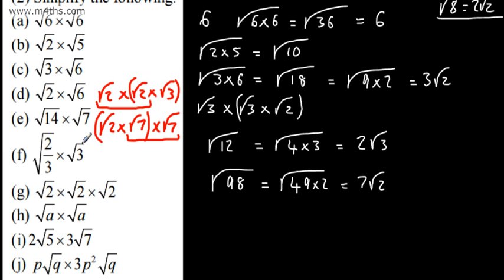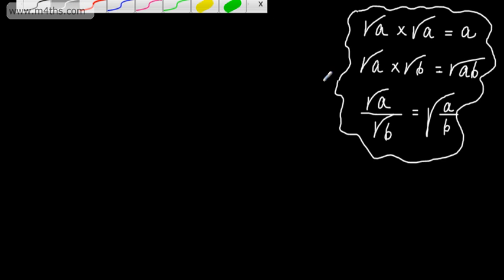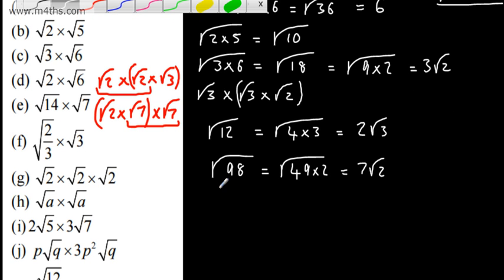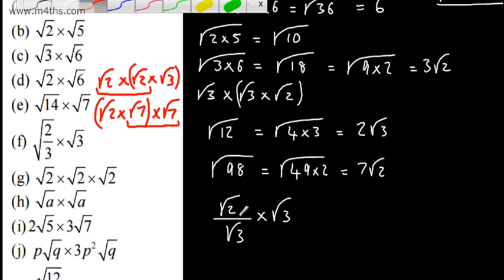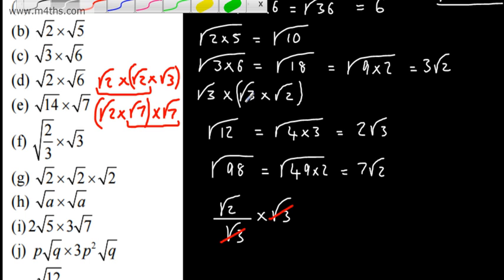With this one, we've got a few different approaches. I can reverse the particular rule and use that to my advantage. What I'm going to do is write this as the root of 2 over the root of 3. If we have the root of a over b, it's the root of a over the root of b, multiplied now by the root of 3. Using basic multiplication laws with fractions, these will cancel, and that gives me root 2.